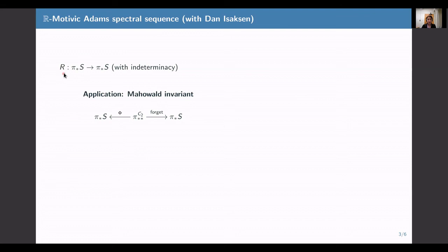This work has applications to the Mahowald invariant, which is a map R from the stable homotopy groups of spheres to itself. This is a map with indeterminacy, it's always non-zero, and it increases stem, so it increases this degree here.